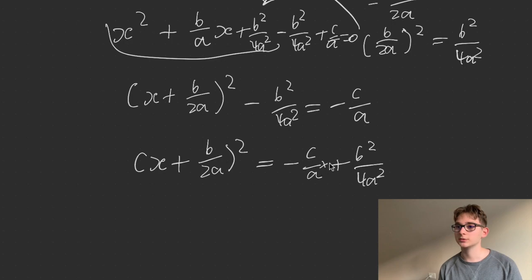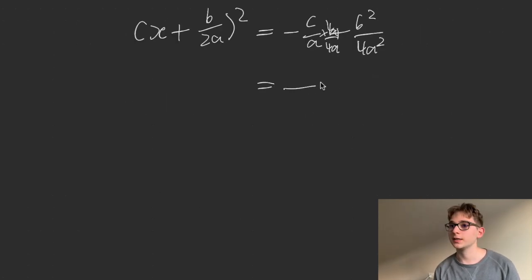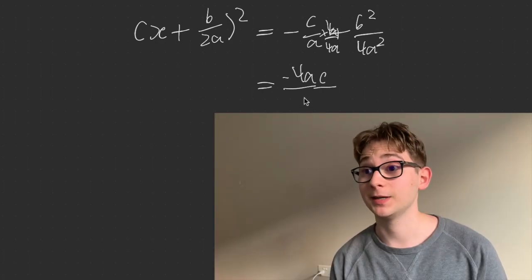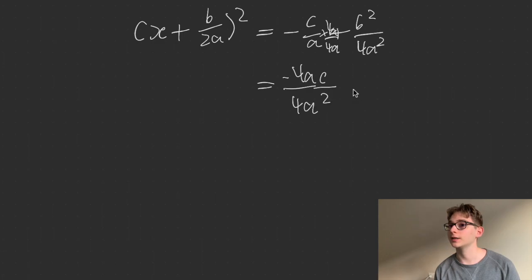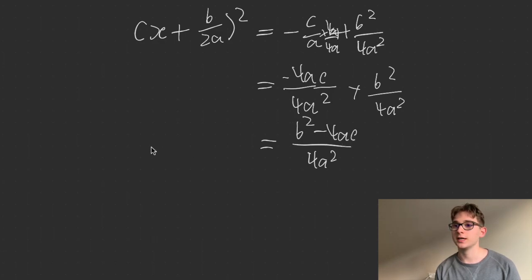So now I'm going to move everything else to the other side so that I can isolate this term with the x in it. So you're going to get minus c on a plus b squared on 4a squared. And then here, you can multiply top and bottom by 4a so that you can combine the fractions. You're going to get minus 4ac. I know you might be starting to recognize what this might look like soon. Plus b squared on 4a squared. Then you can combine them.